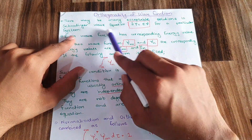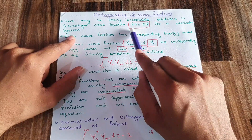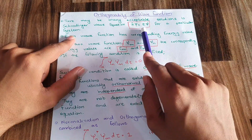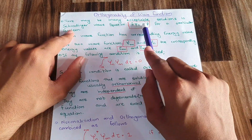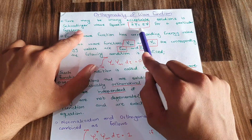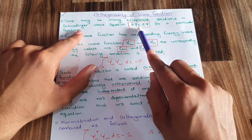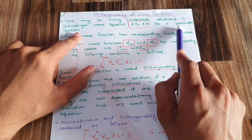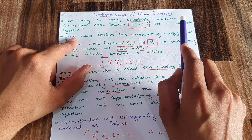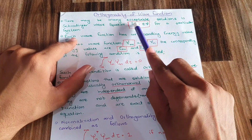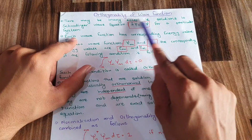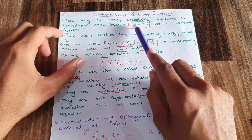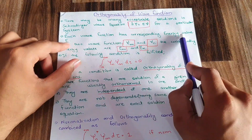First of all, consider the Schrödinger wave equation: H·ψ = E·ψ, where H is the Hamiltonian operator and E is the energy value. There may be many acceptable solutions to the Schrödinger wave equation. For every solution, I will have a wave function corresponding to an energy value E.